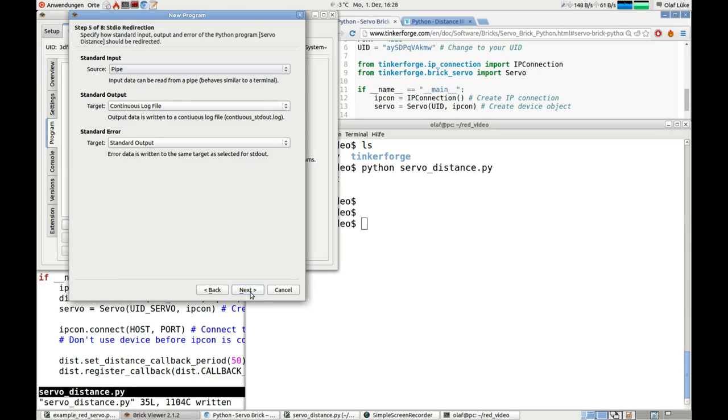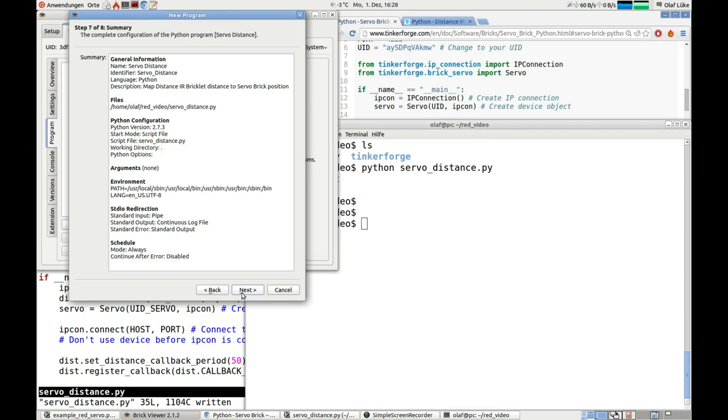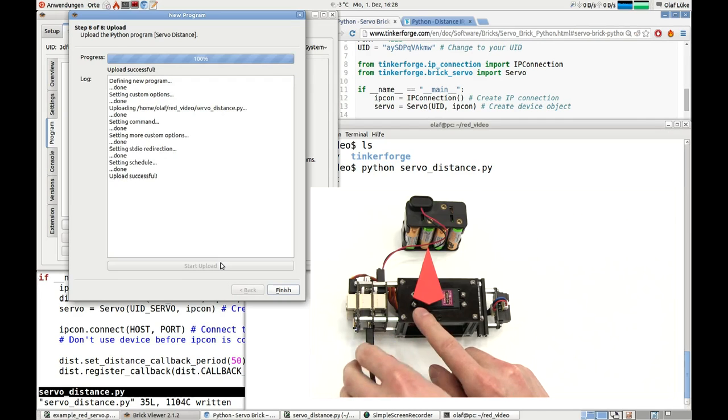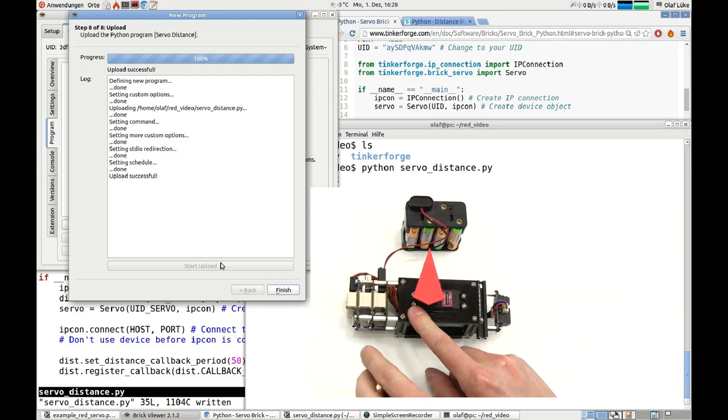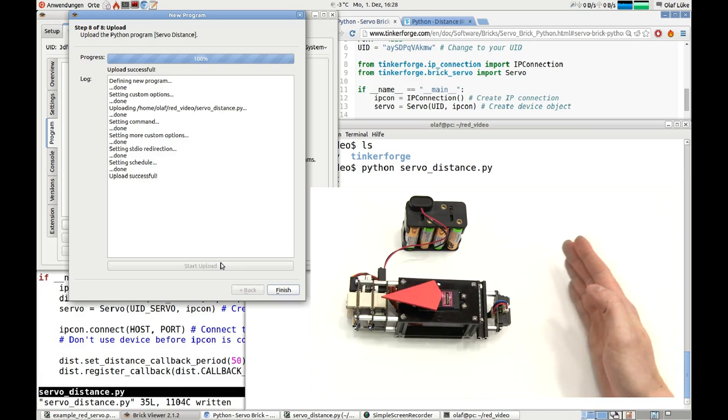We can see an overview of our configuration and upload everything to the red brick by a simple press of a button. Our project is not controlled by an external PC anymore. The Python program on the red brick controls the project now.